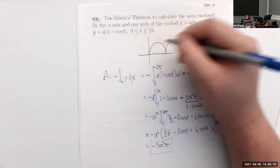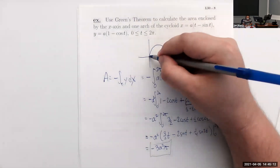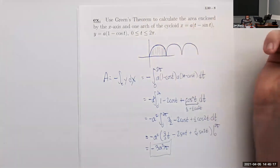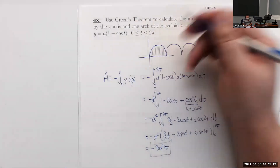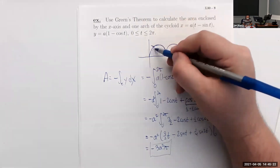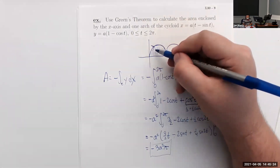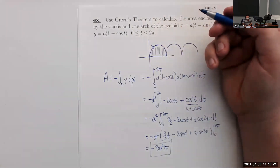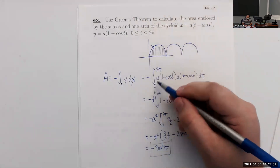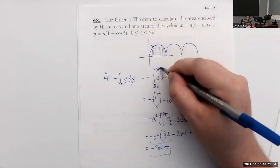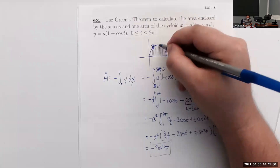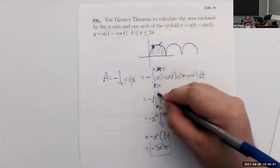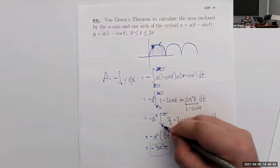Note: going from 0 to 2π follows the cycloid in a negatively oriented direction — D is to the right of our path. To be positively oriented we should go from 2π to 0, which flips the sign. Plugging in: sin(2π) = 0, sin(4π) = 0, and the zero endpoint gives zero, yielding 3πa². The area under one arch of the cycloid is 3πa².